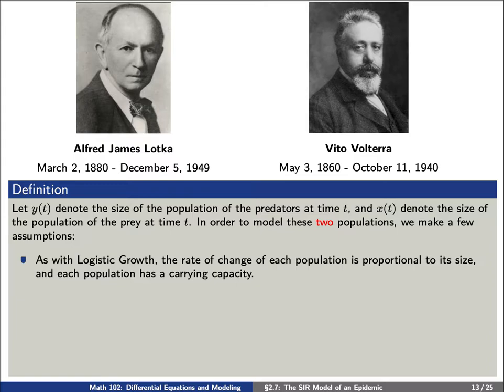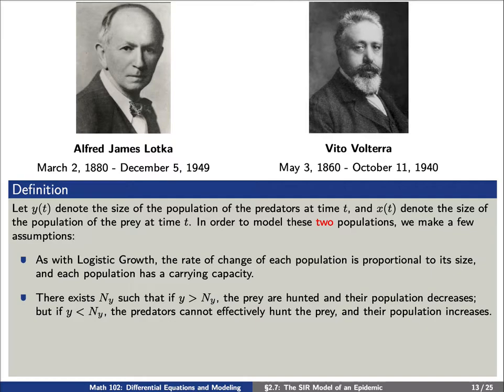Second, there exists a number n_y, such that if y is greater than n_y, then the prey are hunted and their population decreases. However, if y is less than n_y, then the predators cannot effectively hunt the prey, and their population decreases.